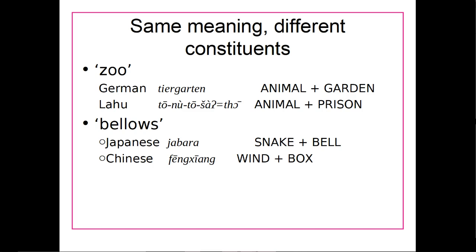In Japanese, 'snake' plus 'bell' combines to form 'bellows.' In Chinese, 'bellows' is the combination of 'wind' and 'box.' So just because one language has a certain compound meaning something, another language might use a different one. You can't necessarily assume that all languages will have the same compounds meaning the same things.